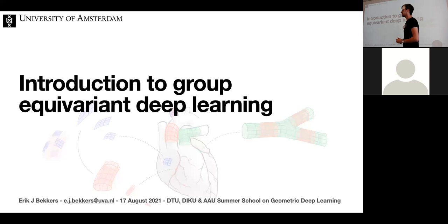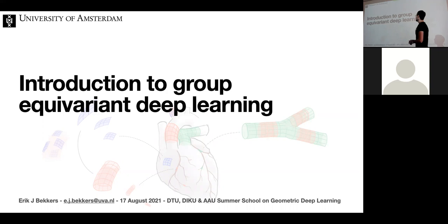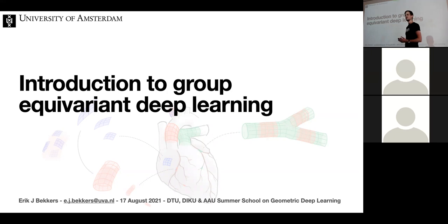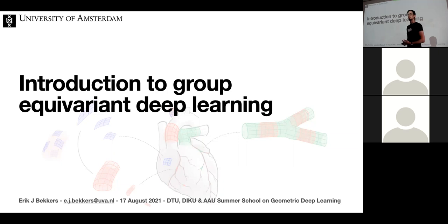For those who came because of the title about graph neural networks, you won't be disappointed — group convolutional networks are much better and nicer, and you can combine them. I'm a researcher in geometric deep learning, focused a lot on the equivariant aspect. This lecture will be full-on about group theory in deep learning.